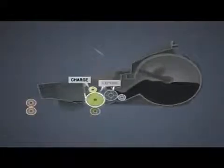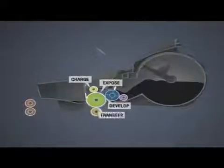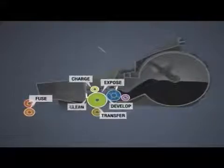There are six distinct processes involved in producing a laser-printed page, all of which occur within the cartridge. Lexmark Laser Technology uses an electrophotographic process to transfer digital data to paper.